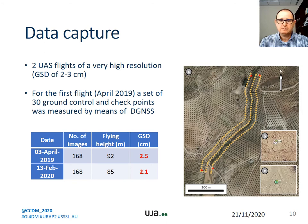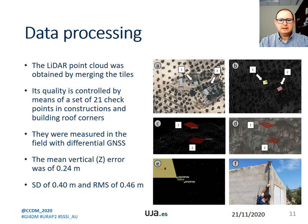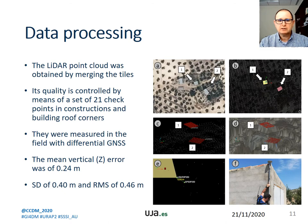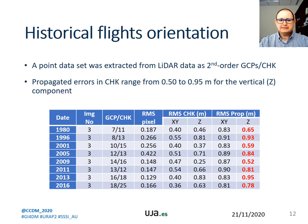The other flight was made on February 2020. Once the data was acquired, the second step is the processing. First, the LIDAR point cloud was obtained by merging the corresponding tiles. Its quality is controlled by means of a set of 21 checkpoints extracted from construction and building roof corners, measured in the field with differential GNSS. The mean vertical error was 0.24 meters, with a standard deviation and root mean square of about 0.45 meters. The historical flights are oriented using a point dataset extracted from LIDAR data as second-order GCPs.